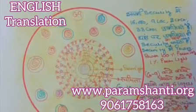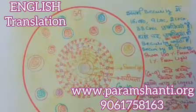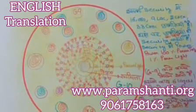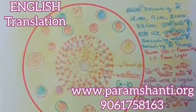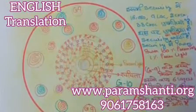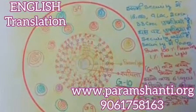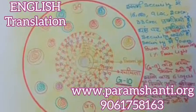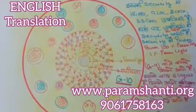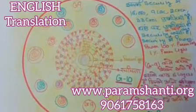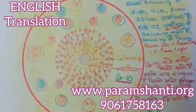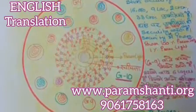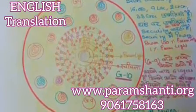In the outer layers, there are Paramparam Vishnus and Brahmas. Above them, there are 6 layers. In these 6 layers, 3 layers are for inner souls — that is, for G9 universal souls — and 3 layers are for outer souls, that is, for tourist souls.